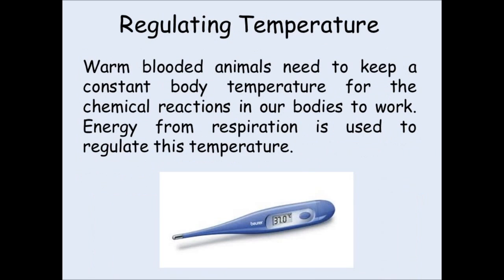A third use is regulating temperature, or to give it its proper name, thermoregulation. This only occurs in warm-blooded animals — for instance, mammals and birds. This doesn't happen in cold-blooded animals, such as reptiles. In warm-blooded animals, our body temperature is kept at a fairly constant level: for humans and mammals it's about 37 degrees Celsius, while in birds it tends to be a bit higher, about 42 degrees.